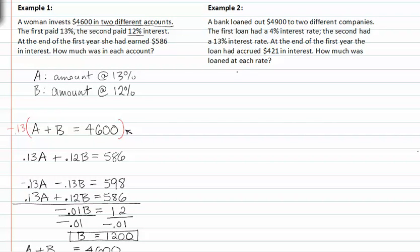In example two, a bank loaned out $4,900 to two different companies. The first loan had a 4 percent interest rate, and the second had a 13 percent interest rate. So A will represent the amount at 4 percent, and B will represent the amount at 13 percent. We know that all together, A plus B equals 4,900 dollars.